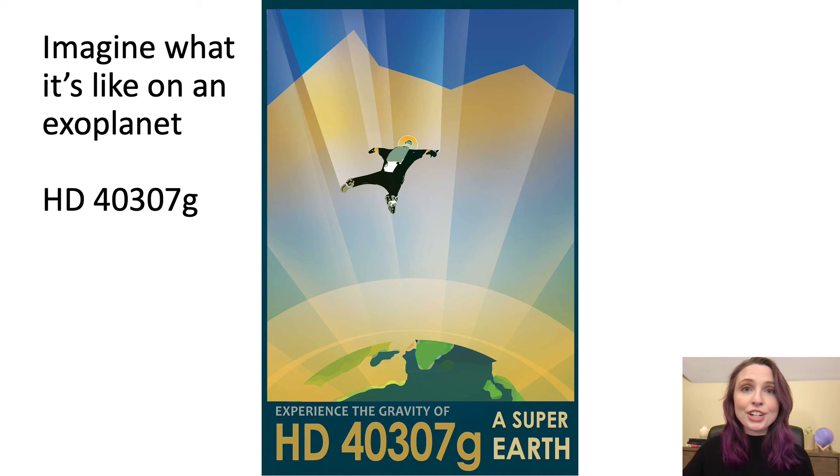And here's another poster of HD 40307G. Super catchy name, I know. This planet creates a bigger wobble in its star than the Earth does in the sun. So that means that this planet is bigger than Earth. It's actually seven times as massive. In this poster, NASA is imagining what it would be like if you could skydive on this planet. This would be a daredevil's dream. Because this planet is more massive than Earth, its gravity would be a lot stronger than gravity is here on Earth. So you would fall a lot faster. You would also have to be a lot stronger because anything on this planet would weigh a lot more than it does on Earth.